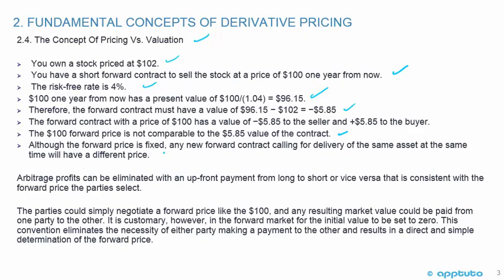The forward price is fixed. That forward price of $100 one year from now is not going to change. Any new forward contract calling for delivery of the same asset at the same time will have a different price. As time goes on, the underlying price is going to change, so the value of the contract is going to change. Arbitrage profits can be eliminated with an upfront payment from the long to the short or vice versa, consistent with the forward price that the parties select.